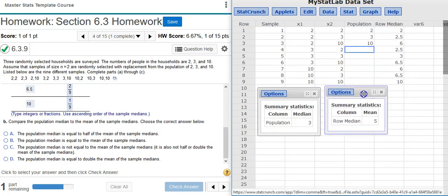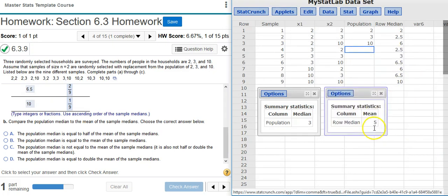And the mean of the median values is 5. So we see that 3 is the population median, and 5 is the mean for the sample. So now we can look at our answer options and see which one is the correct one.